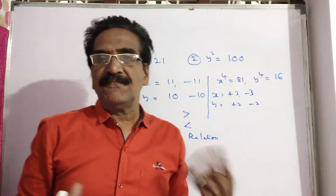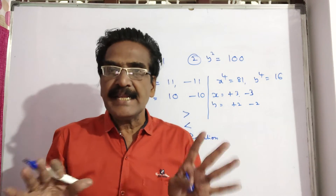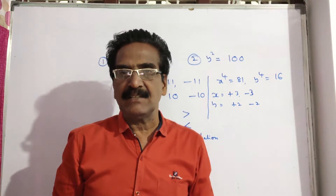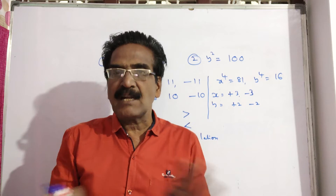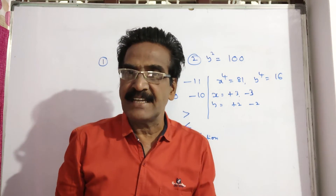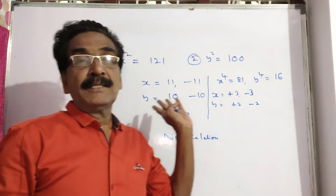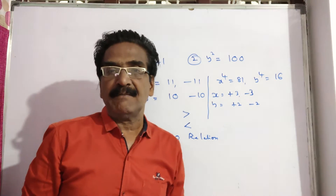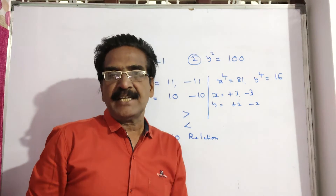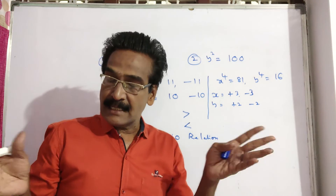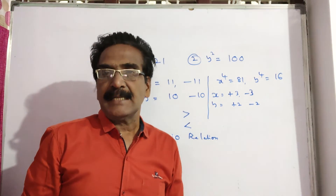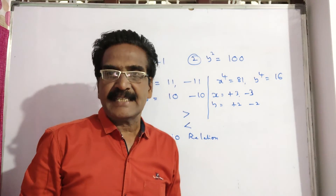Not only in case of square, but for any even power, if any even power is given, you cannot establish any relation between x and y. Because in case of even powers we have plus-or-minus, and that's why we can't establish any relation between x and y.